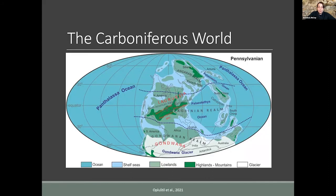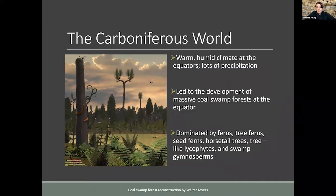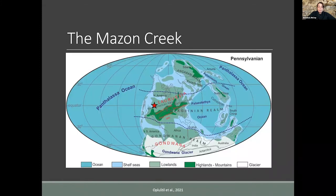The coal swamp forests run across what is today North America and Europe, right at the equator. These forests were dominated by ferns, tree ferns, seed ferns, horsetail trees, tree-like lycophytes, and swamp gymnosperms. Plotting the Maison Creek on the map, it falls basically right on the equator, right on these coal swamp ecosystem areas. Notably, it's also right on the boundary between land and sea, where light blue areas represent shallow epicric seas sitting over a continent.